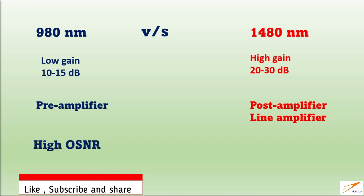We use 980 nanometers amplifier when high OSNR is requirement. Using 1480 nanometers amplifier when low OSNR is requirement. These are main differences in using these wavelength amplifiers. Let's understand the reason.